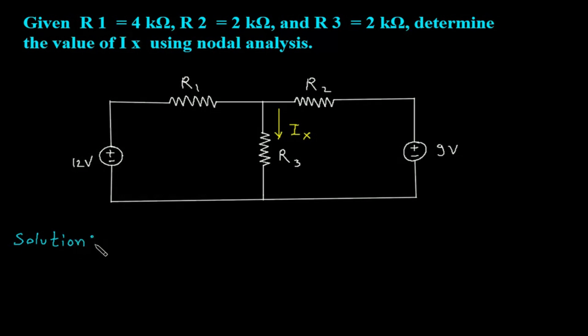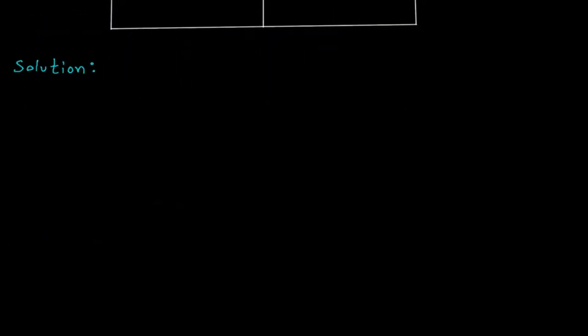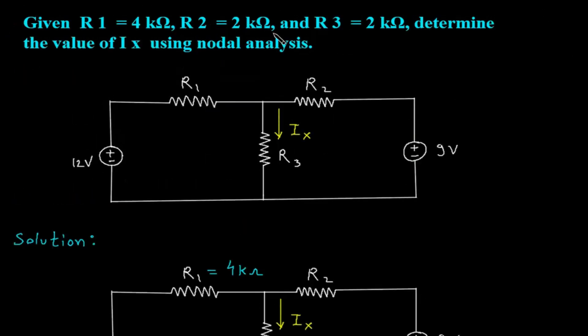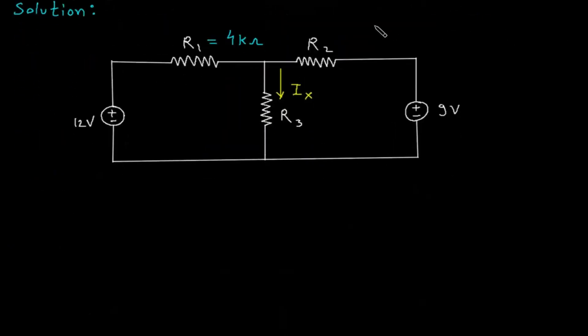Solution: First we will redraw the circuit. R1 is equal to 4 kΩ, R2 is 2 kΩ, and R3 is 2 kΩ. We have to find this Ix. Let's say this is Vx, and this is a reference node with 0 volt.